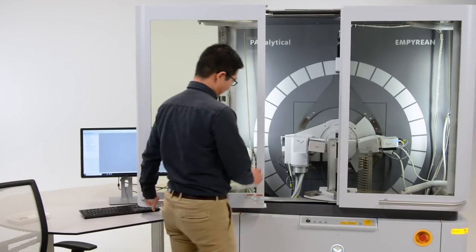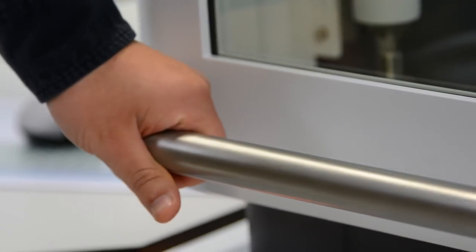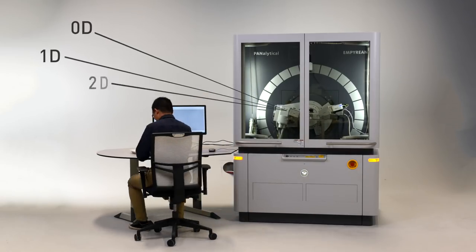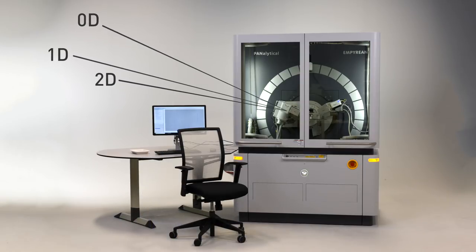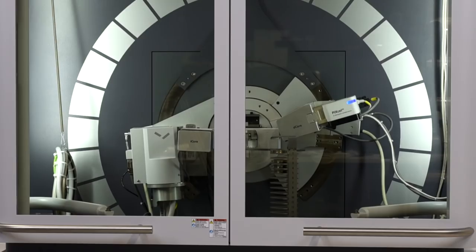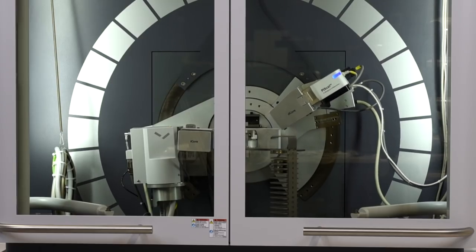Empyrean with multi-core optics is the only platform on the market that can seamlessly perform 0D, 1D and 2D measurements in a fully automated way, extending once more the dimensionality of your data set to unravel hidden features of your samples.